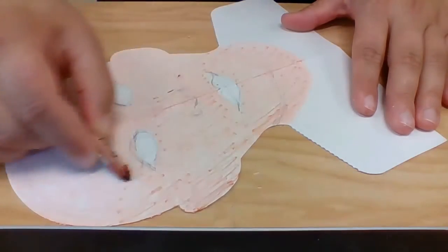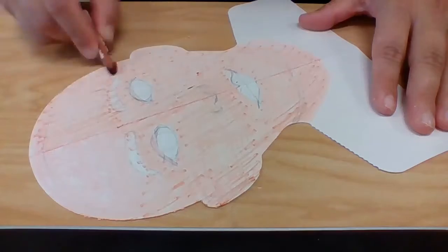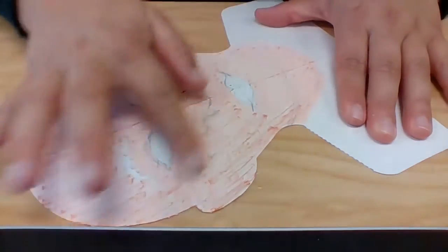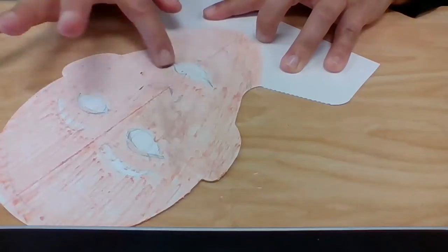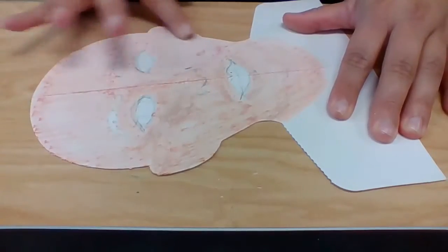Now I'm lightly pressing with my brown. You can always add another layer if after the first layer you decide it needs to be darker. Since my coloring is a little bit streaky here, I'm going to take a clean finger and blend those colors together.